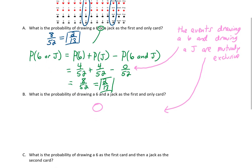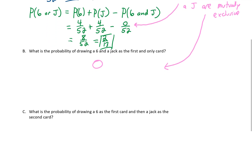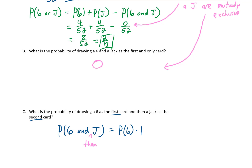The next problem is: what is the probability of drawing a 6 as the first card, and then a jack as the second card? This is a different kind of problem. We have two experiments here, and we want the probability of both of those experiments happening back to back. This is what we call an AND problem, or as I like to call it, an AND-THEN problem. To complete the problem, what we need to do is multiply the probability of drawing a 6 by the probability of drawing a jack.